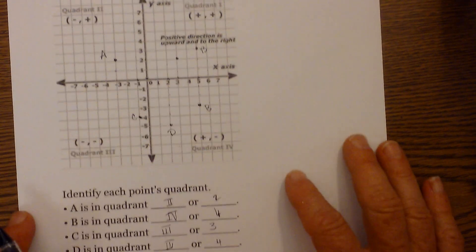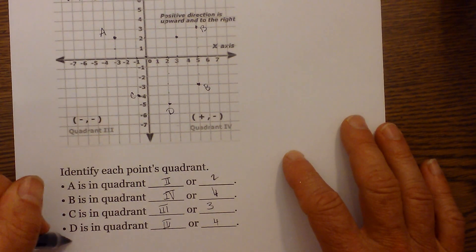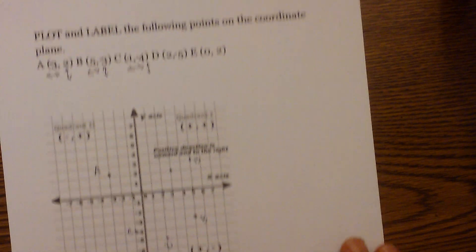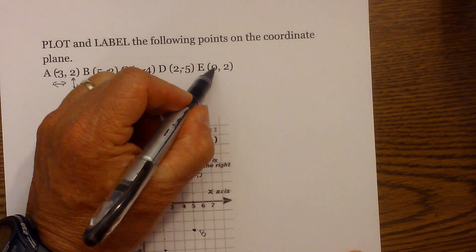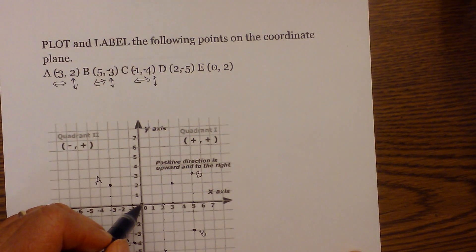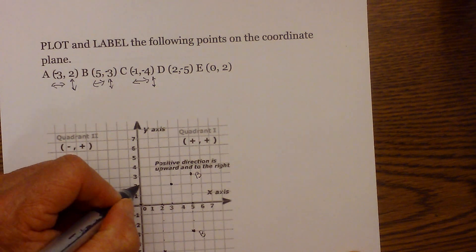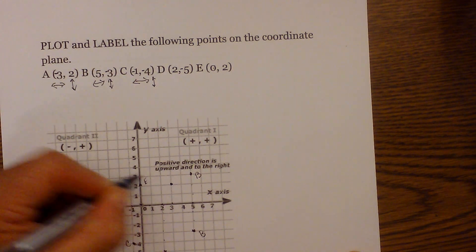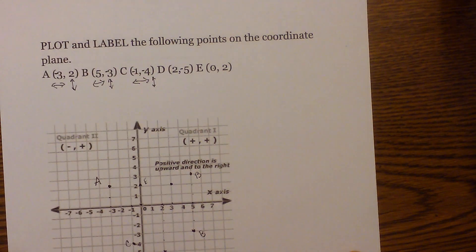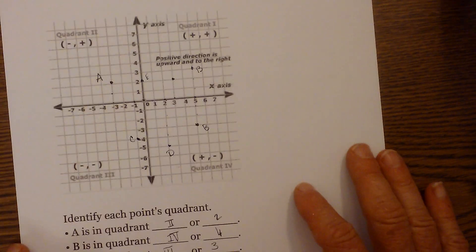And finally E. We're going to start at the origin which is zero. So x is zero and we're going to go up two. So this would be E, and remember zeros are not in any quadrant. So it is on the y-axis.